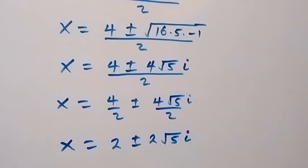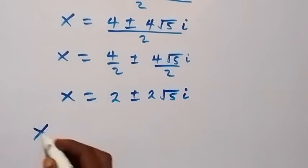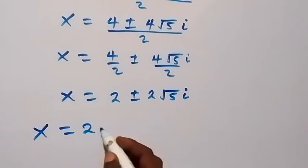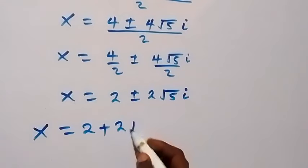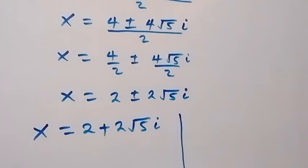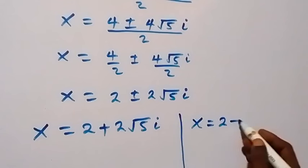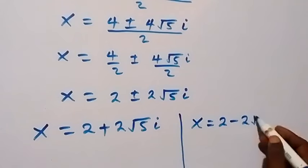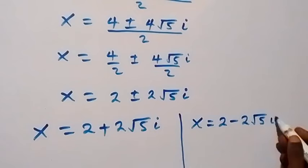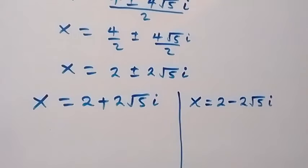We have 2 possible values of x. So x1 equals to 2 plus 2 root 5 i, or x2 equals to 2 minus 2 root 5 i.